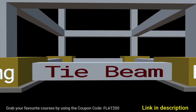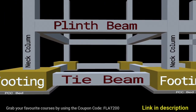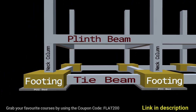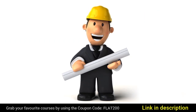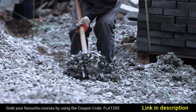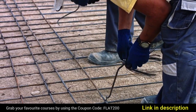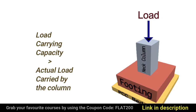I have already discussed how to calculate the load carried by a column in a building frame. In this lecture, I am going to discuss how to calculate the load carrying capacity of a column in a structure. This will help us find out if the given size of a column, grade of concrete, and the quantity of steel provided would satisfy the load carrying capacity of the column. In simple words, the load carrying capacity of a column shall always be greater than the actual load carried by the column.